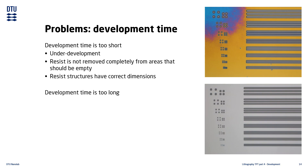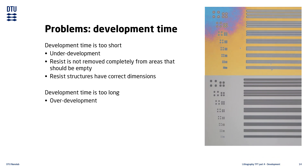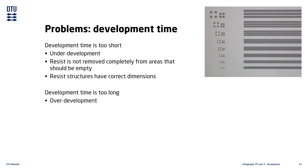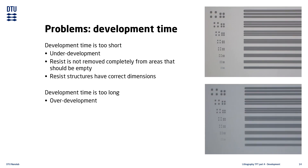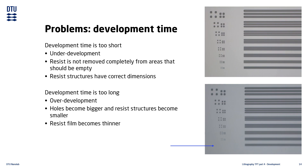When the development time is too long, we say that the resist is overdeveloped. In this scenario, the pattern in the resist no longer has the correct dimensions, as the developer etches more than it was supposed to. Holes tend to become bigger and structures tend to become smaller. Very small structures can sometimes completely disappear. The resist film itself also becomes thinner, as it is more aggressively etched. This process of removing unexposed resist is known as dark erosion.